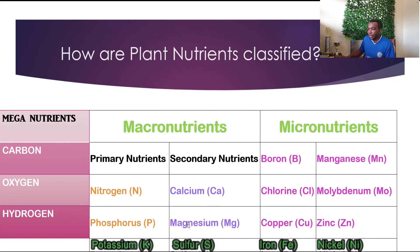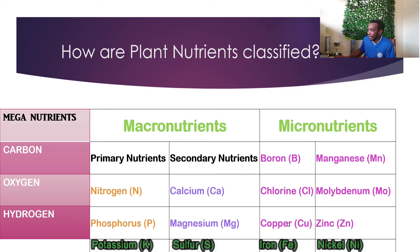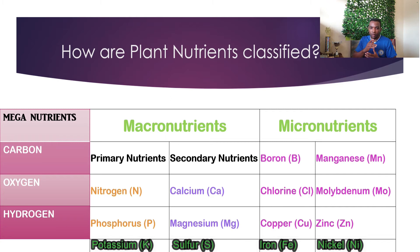Our secondary macronutrients comprise calcium, magnesium, and sulfur. Moving on to micronutrients — as the word suggests, micro means small, meaning the plant uses these nutrients in very small quantities. The minerals found in micronutrients are boron, chlorine, copper, iron, manganese, molybdenum, zinc, and nickel. These are the three major groups that minerals and non-minerals fall under, with macronutrients being divided into primary and secondary.